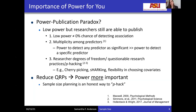This means we may be publishing and interpreting results based on predictors that showed up as significant, while missing true relationships with important implications. Questionable research practices like hypothesizing after results are known or unadjusted multiple testing can make it easier to publish despite effects not existing in reality. I believe that as our fields continue to reduce questionable research practices and emphasize transparent research, a priori sample size planning will become even more important to be able to publish and disseminate our work.